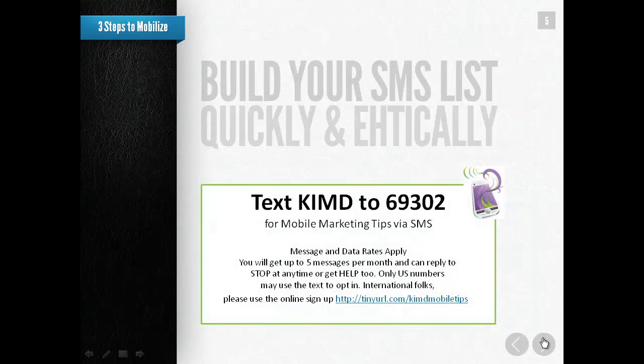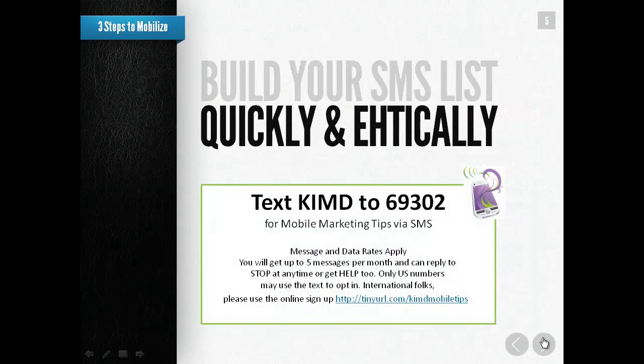On to step two — here's where the demos start. I'm going to share with you how to build your SMS list quickly and ethically. If you'd like to get mobile marketing tips from me via SMS, you can text Kim D — K-I-M-D — to 69302. Again, that's Kim D, K-I-M-D, to 69302.